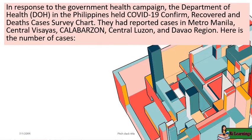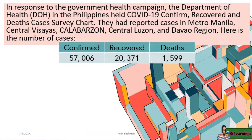In response to the government health campaign, the Department of Health in the Philippines held a COVID-19 confirmed, recovered, and deaths cases survey chart. They reported cases in Metro Manila, Central Visayas, Calabarzone, Central Luzon, and Davao region. The total number of cases: confirmed 57,006; recovered 20,371; deaths 1,599.